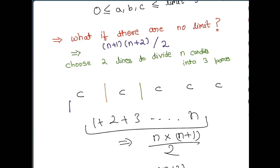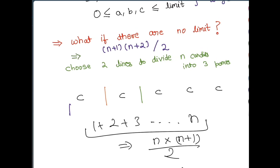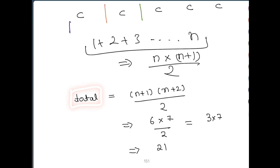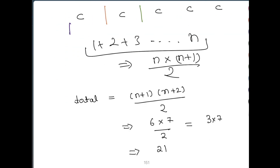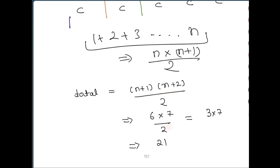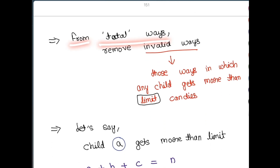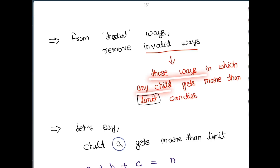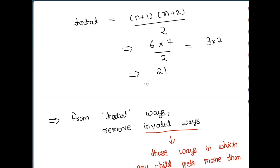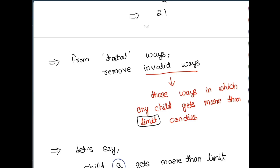We have 21 ways without any limit. But now we need to deal with the limit as well. From the total number of ways we need to remove all the invalid ways — that is, all those ways in which any child gets more than the limit number of candies. Because right now we distributed without any limit, there can be cases where one, two, or all three children are getting more than the limit number of candies.